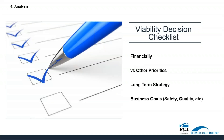Finally, in the analysis, it is important to have a viability decision checklist to see if the decision to automate makes sense for the business. Does it make financial sense? How does it look versus other priorities? Does it make sense long term? Does it align with the business growth strategy? Are there other business goals that this would help meet, like improving safety or adding more consistency to your product and increasing quality?